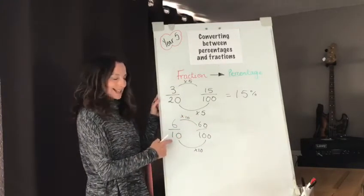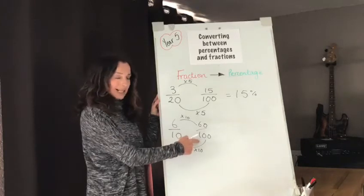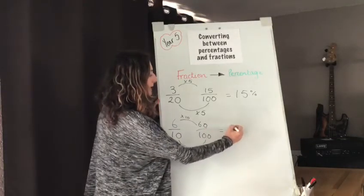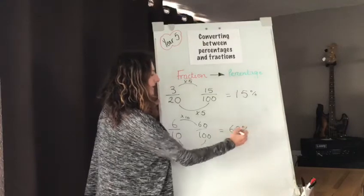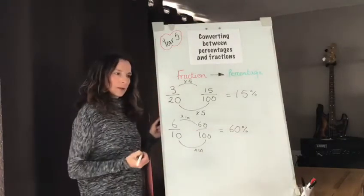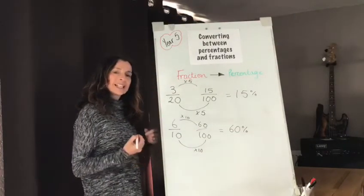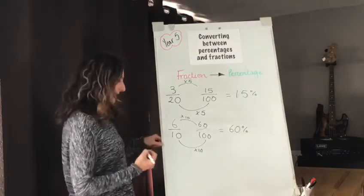So 6/10 is the same as 60 hundredths which means it's 60%. But what if my denominator is larger, greater than 100?